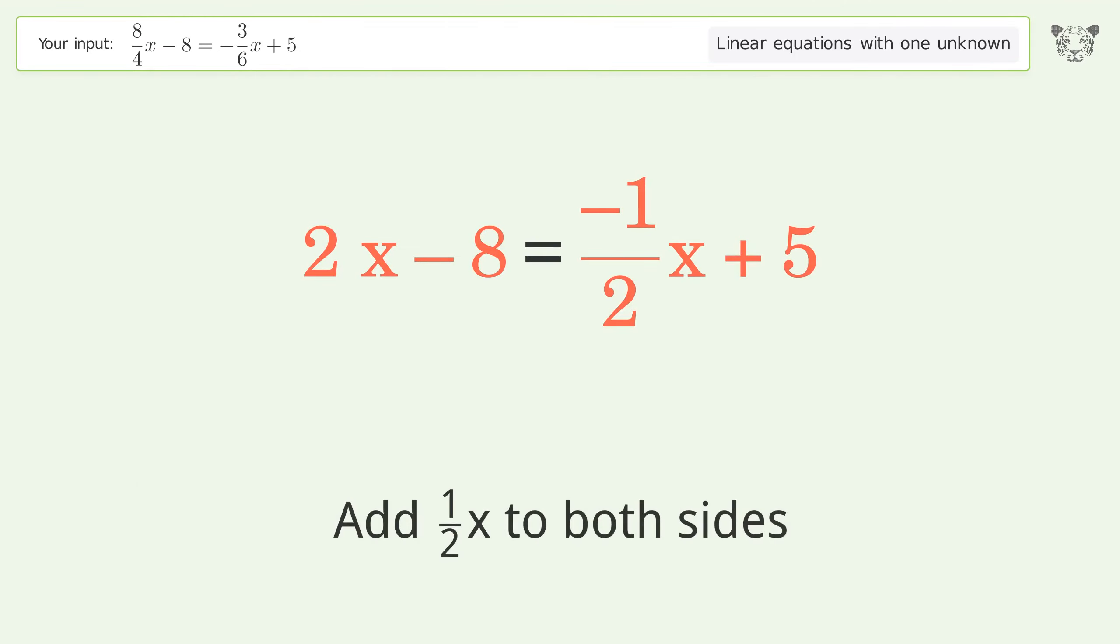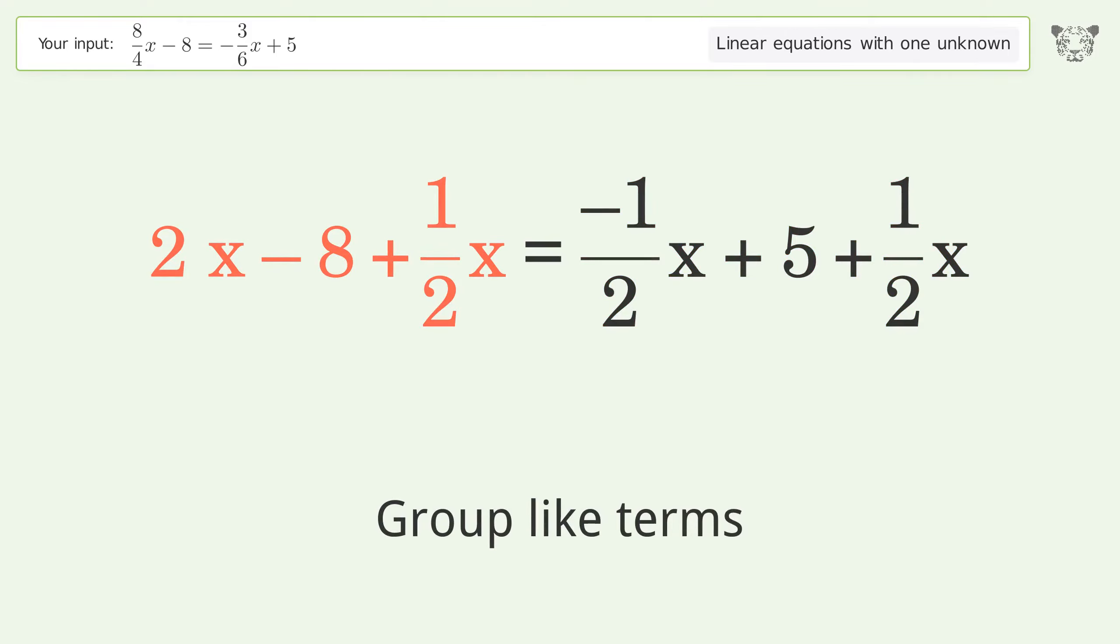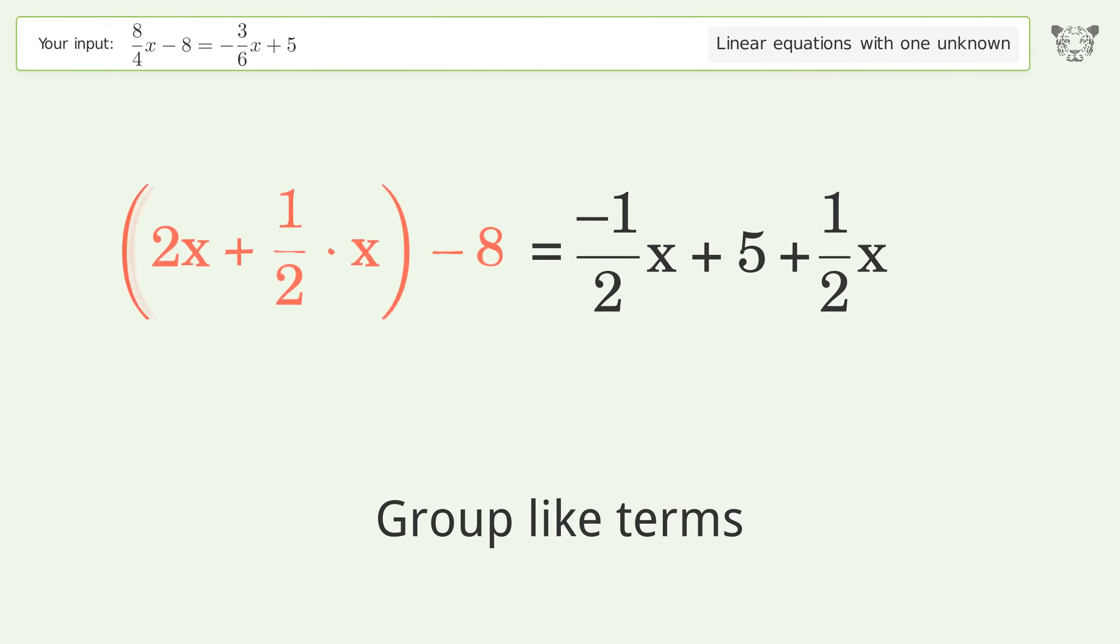Add 1 over 2x to both sides. Group like terms. Group the coefficients.